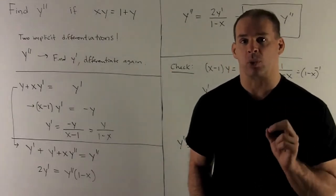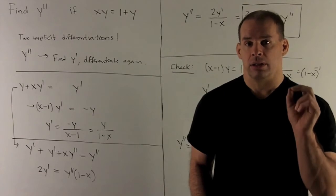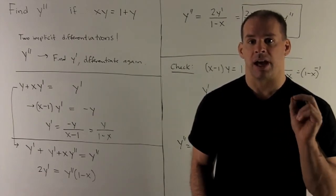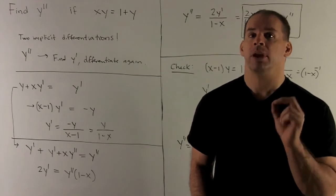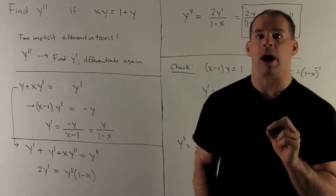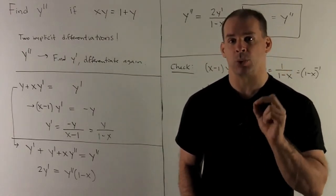On the left-hand side, it's the product rule. So I'll have derivative of x, which is 1, times y, plus x times the derivative of y. That's just y prime. We don't know what that is. That's what we're trying to solve.